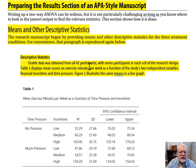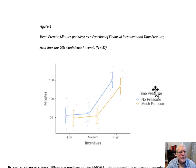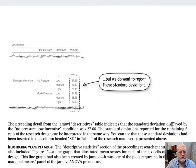Descriptive statistics: Usable data was obtained from all 42 participants, with seven participants in each cell of the research design. Table 1 displays mean scores on exercise minutes per week as a function of the study's two independent variables — financial incentives and time pressure. Figure 1 illustrates the same means in a line graph. We have a table providing mean scores broken down by every possible combination of time pressure and incentives, and a figure illustrating those same means.